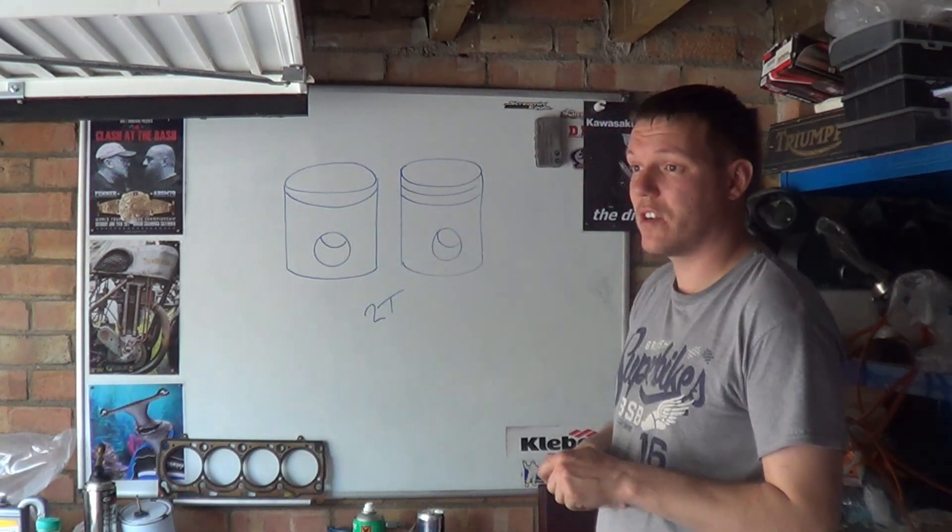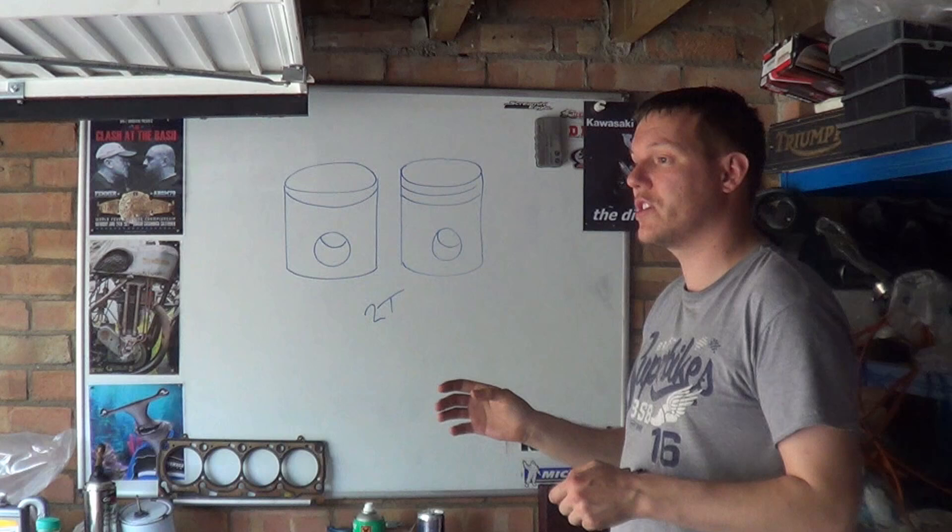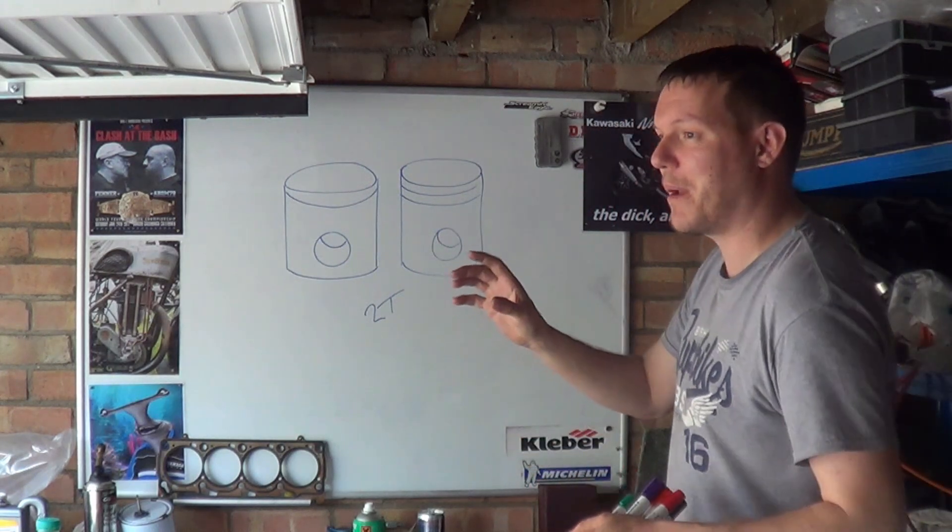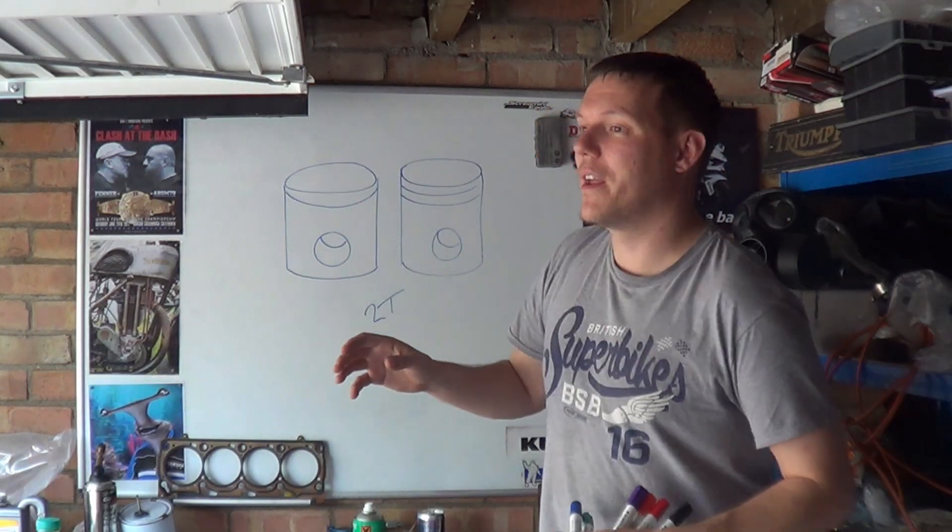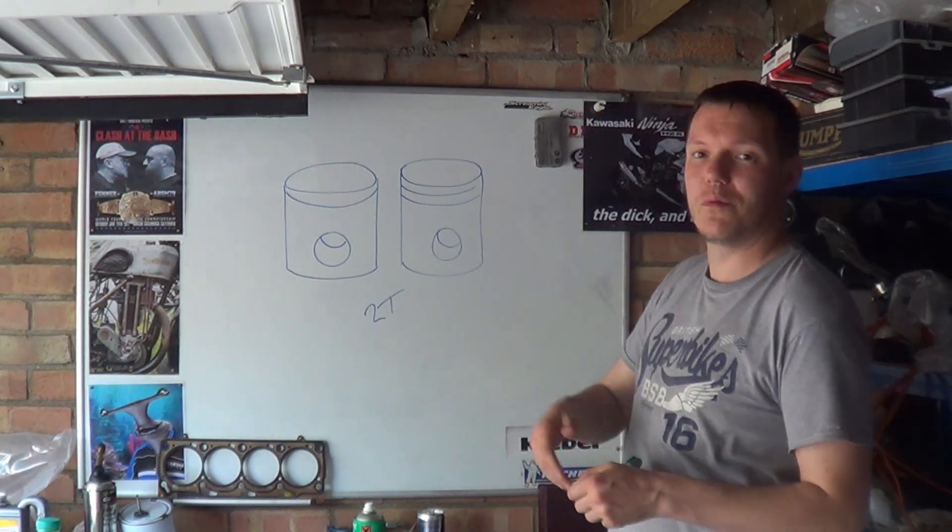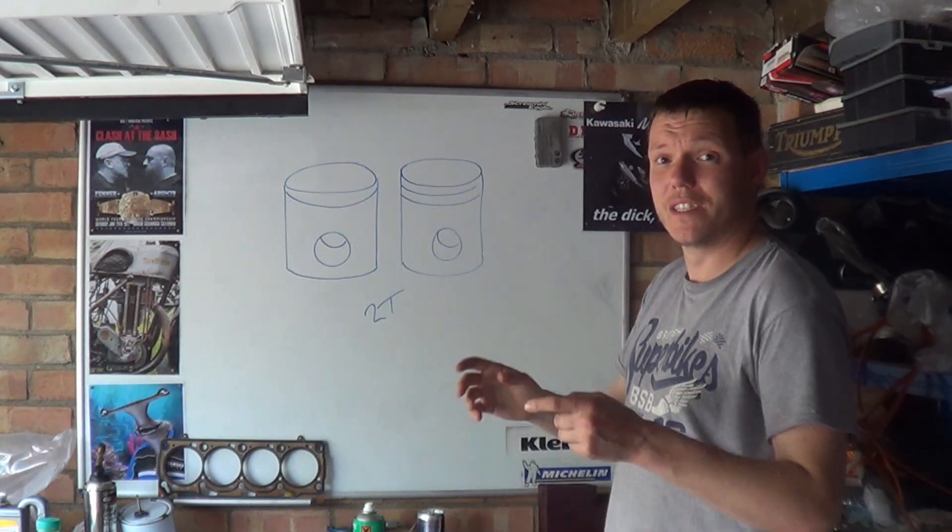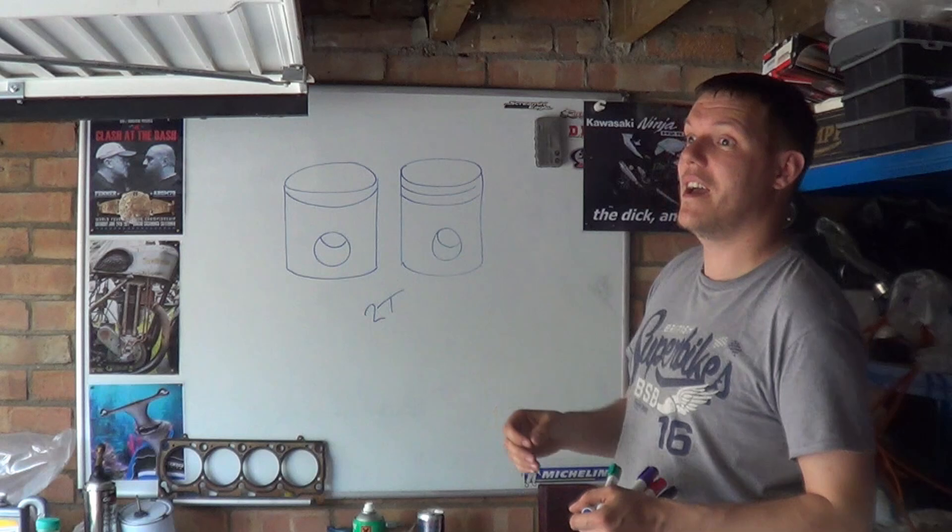Piston rings are quite difficult to manufacture because the fact of the matter is it is an open ring. It's not like making a washer and easy to make perfectly round. When I do get around to it very soon to do the easy engine, you'll see what other dickhead I have to go through to manufacture my own piston rings.